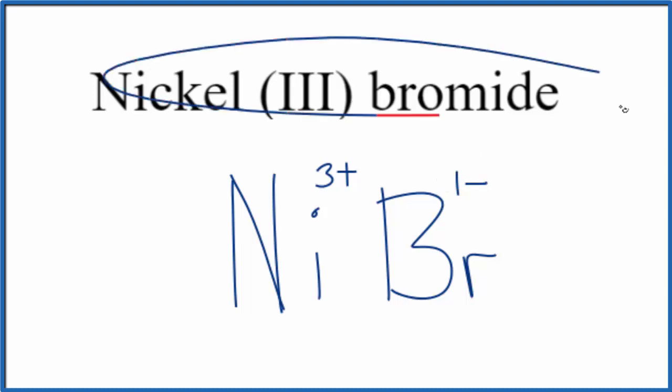Since nickel-3-bromide is neutral, we don't have the word ion after it, these charges need to add up to 0. So if we put a subscript of 3 here, 3 times 1 minus, that's 3 minus, 3 minus and 3 plus, that adds up to 0.